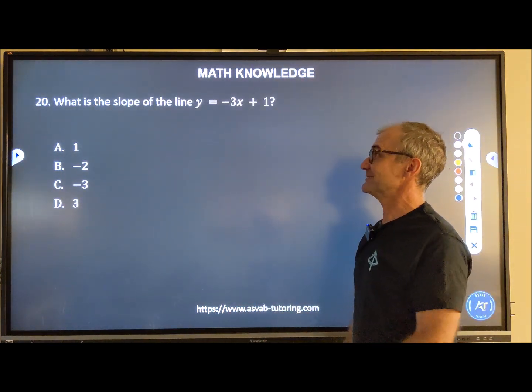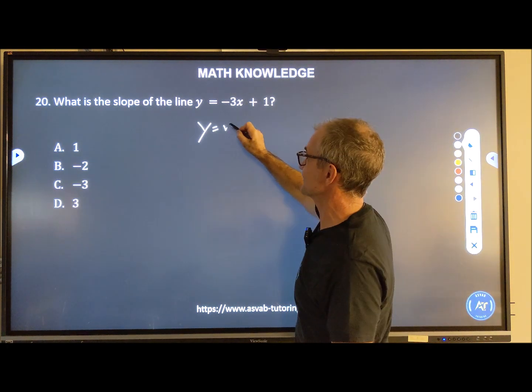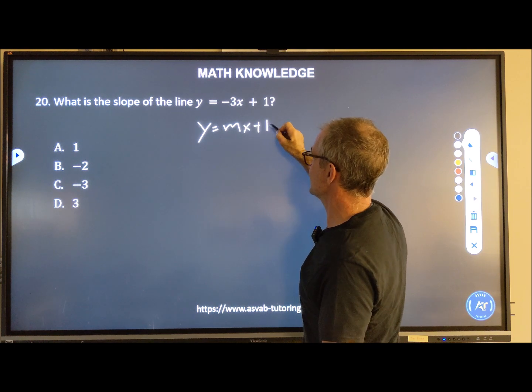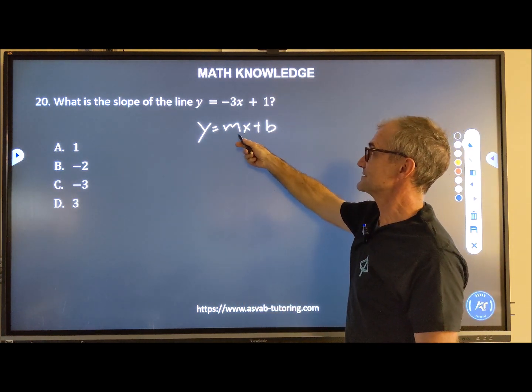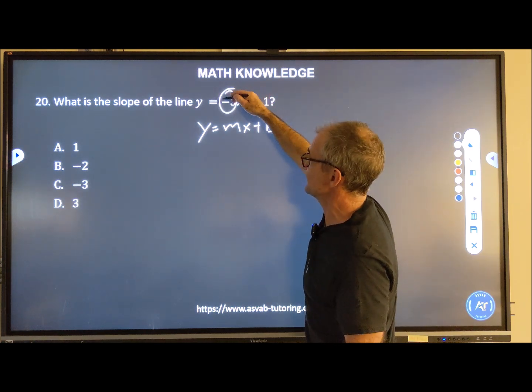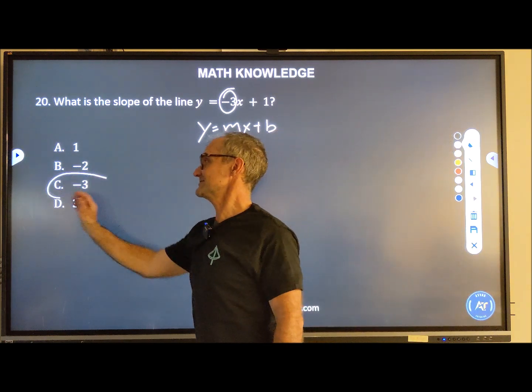Number 20, wrapping it up. What is the slope of this line right here? This is an MX plus B format, or Y equals MX plus B. This is the same M as I was talking about before. That is the slope. The slope is negative 3, the value in front of X. The Y-intercept is 1. So my correct answer is answer C.